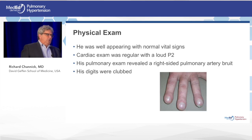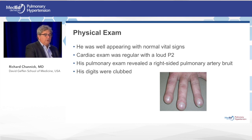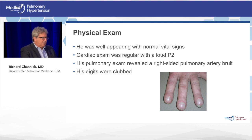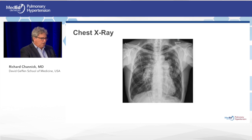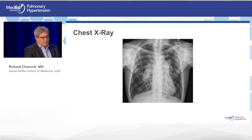On examination, the patient looked okay and was comfortable at rest, with signs of pulmonary hypertension on exam. A right-sided PA bruit was heard over the lung field, and he had very dramatic clubbing noted. His chest X-ray showed very large pulmonary arteries and a somewhat dilated heart — you don't need to be a radiologist to notice. The lung fields looked clear.